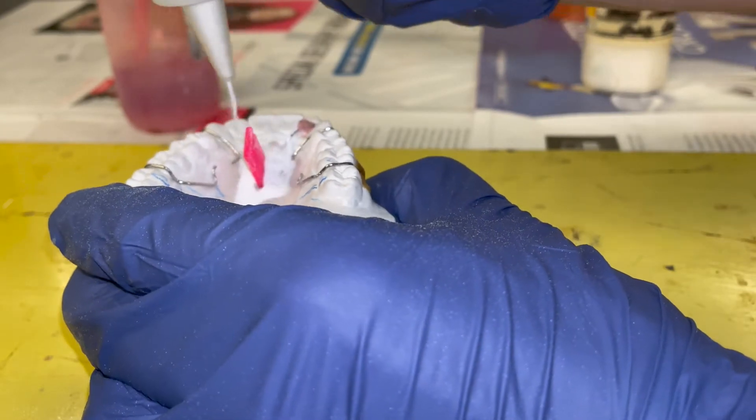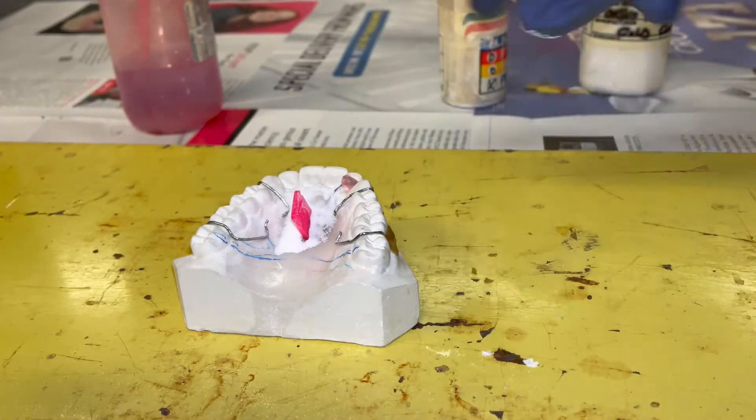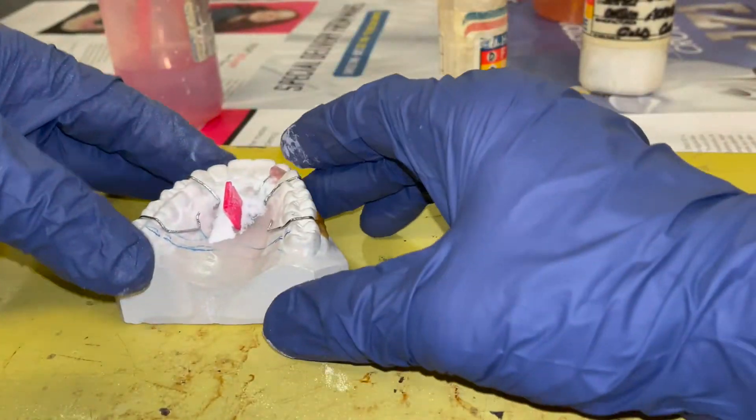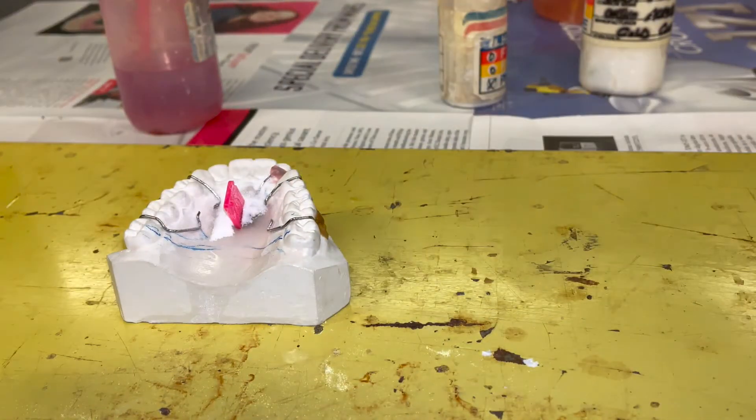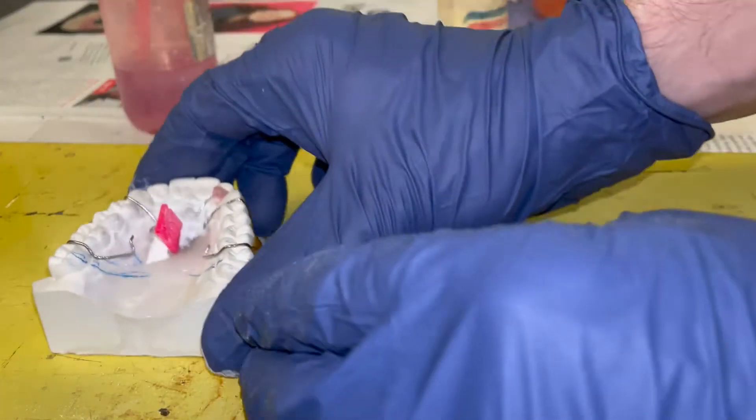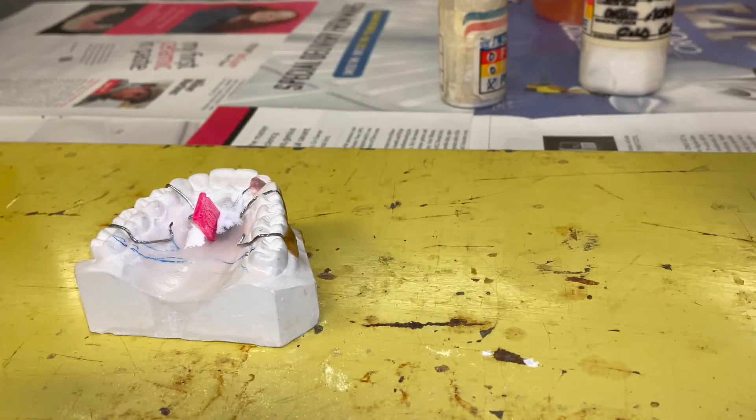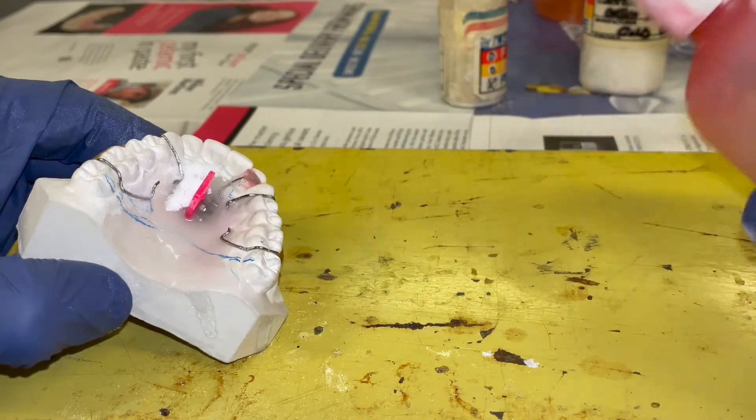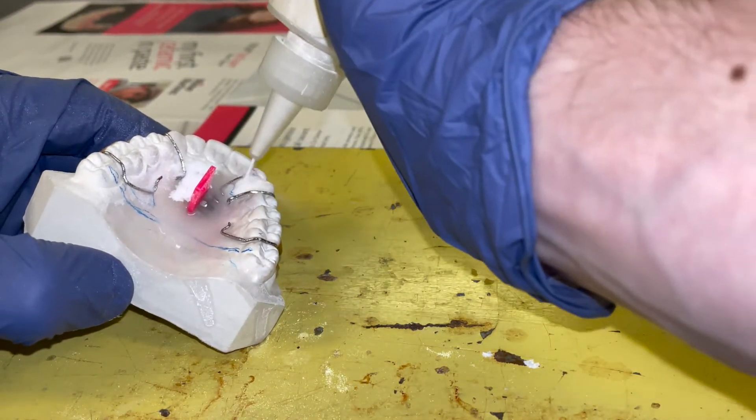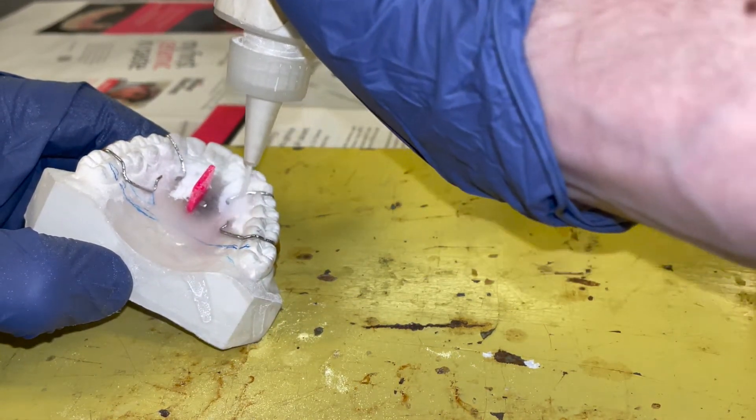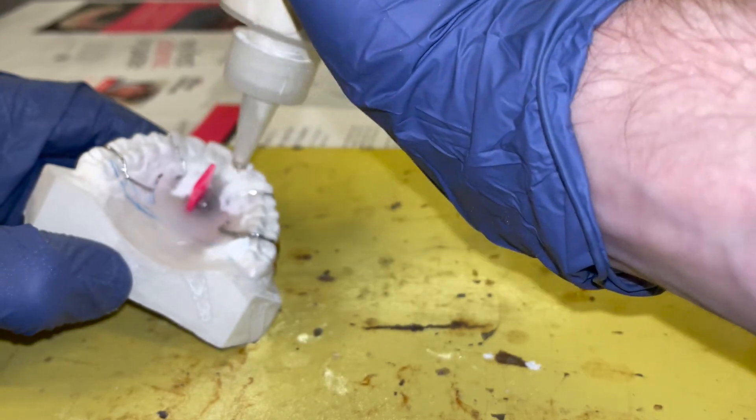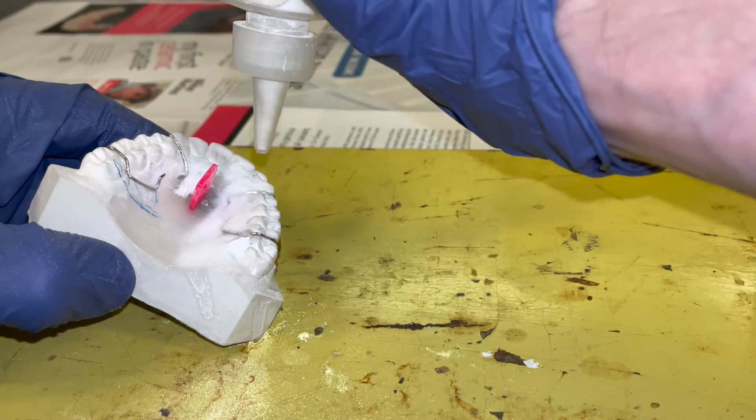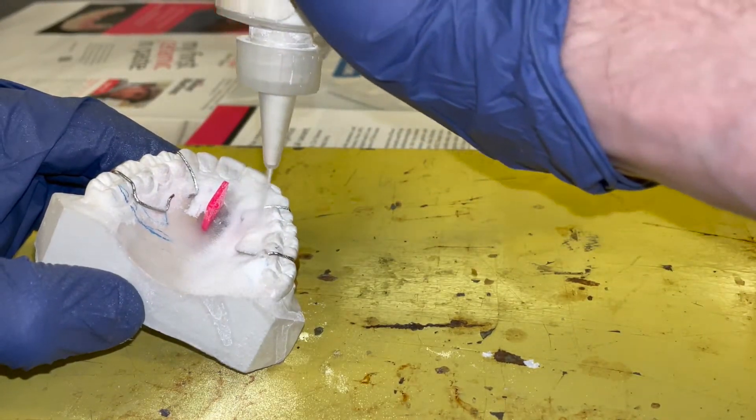Once the expansion screw is in place, we are now going to start adding acrylic around the rest of our retainer, always looking back to make sure the expansion screw has not moved because it will slump sometimes. We always add monomer first and then polymer. Monomer is the liquid, polymer is the powder. You want to make sure that the acrylic flows underneath the wires.